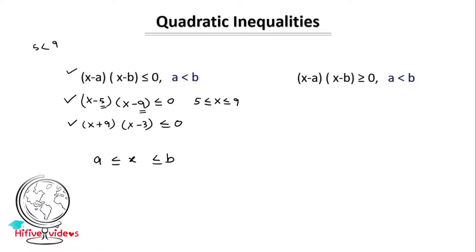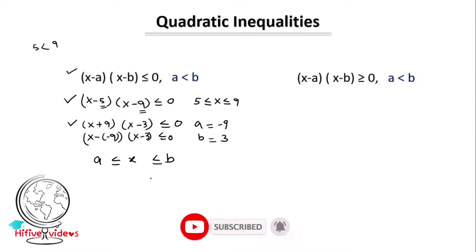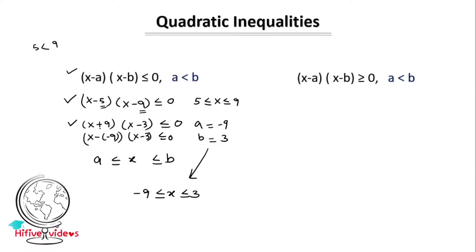Now the second example: x plus 9 into x minus 3 less than or equal to 0. We rewrite this as x minus minus 9 into x minus 3 less than or equal to 0. Here a value is minus 9 and b value is 3. So we have minus 9 less than or equal to x less than or equal to 3.